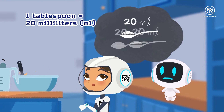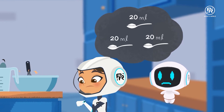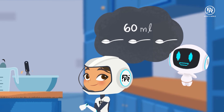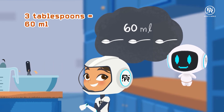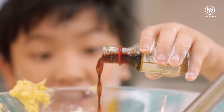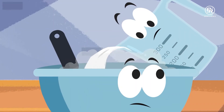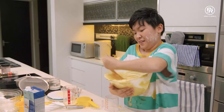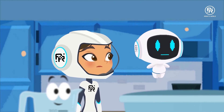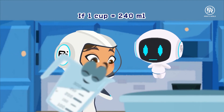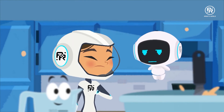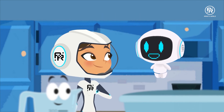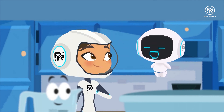One tablespoon is 20 milliliters, so 3 tablespoons equals... 20 times 3 is 60. 60 milliliters! 3 tablespoons equals 60 milliliters. 1 cup is 240 milliliters and you will need one and a half cups, so multiply 240 by 1.5. 360. 360 milliliters in one and a half cups.